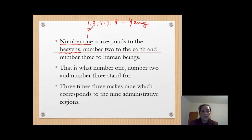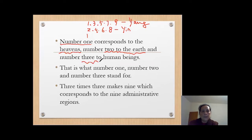And two, four, six, eight — those are the yin numbers. So earth is number two; number two is yin; earth is yin. Then number three belongs to human beings. Number three belongs to yang.